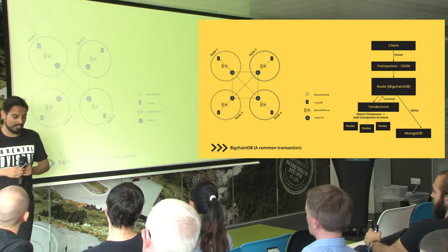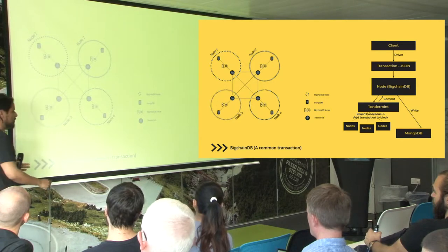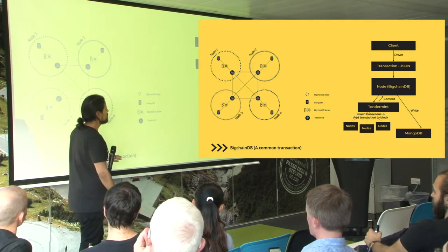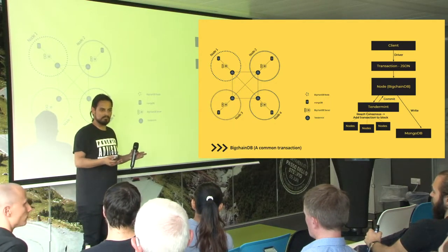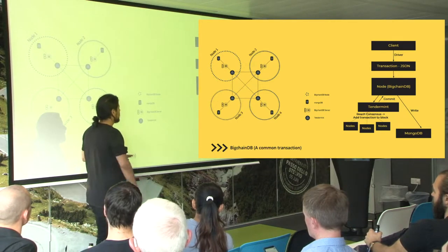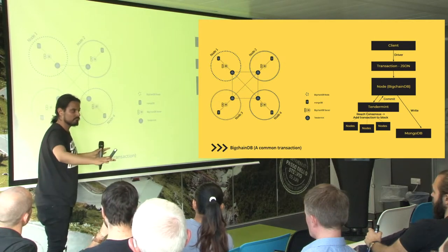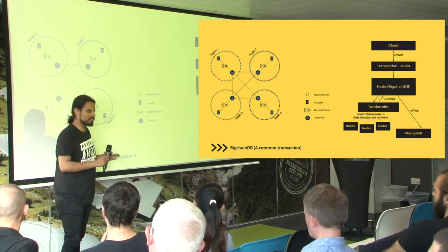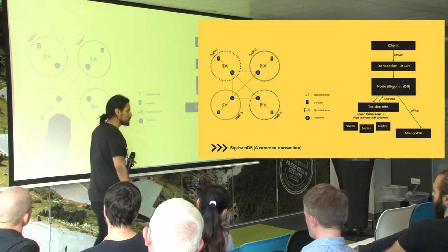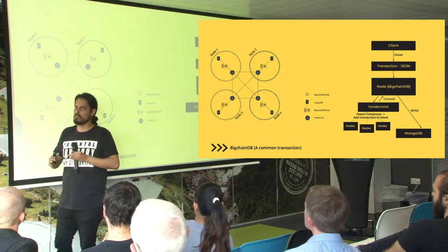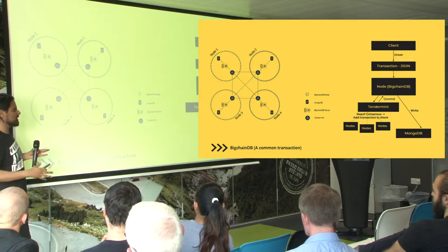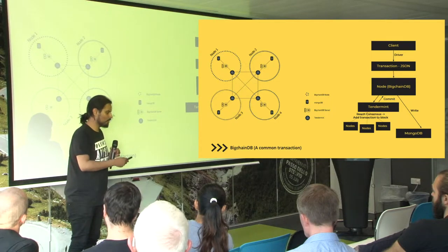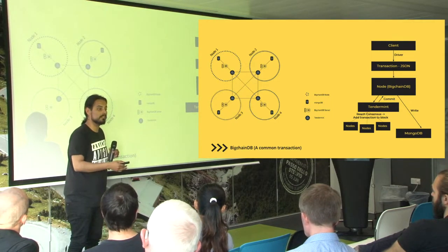Each node has three parts: MongoDB as the database, the BigchainDB server as the overarching processing runner, and Tendermint. A transaction in this system works like this: the client makes a request — a transaction in JSON format — communicated to one of these random nodes. BigchainDB sees it and asks: is this a valid transaction? It validates and sanity checks. Then it goes to Tendermint. Tendermint is one of those companies really blowing up — a purely service-based company, not ICO related.